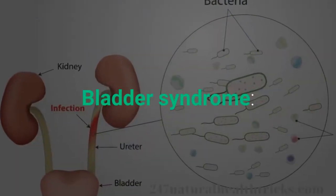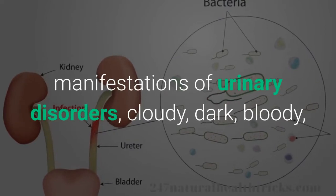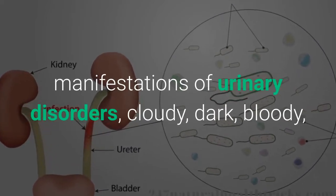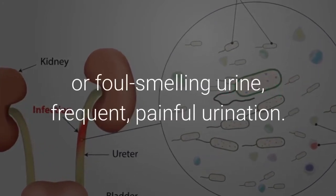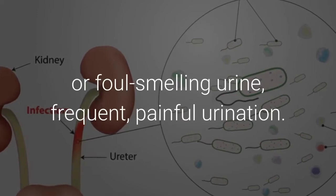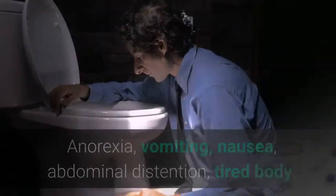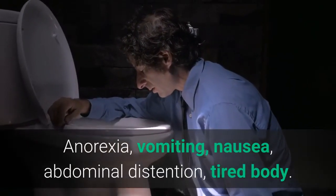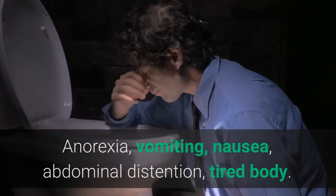Bladder syndrome symptoms include manifestations of urinary disorders: cloudy, dark, bloody, or foul-smelling urine, as well as frequent and painful urination. Additional symptoms include anorexia, vomiting, nausea, abdominal distension, and a tired body.